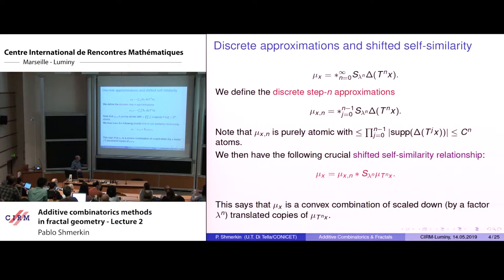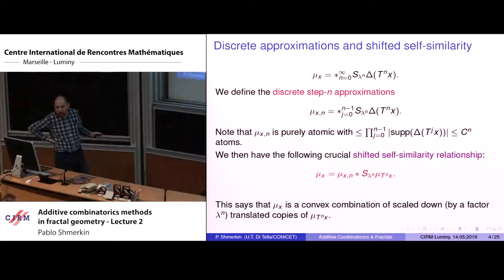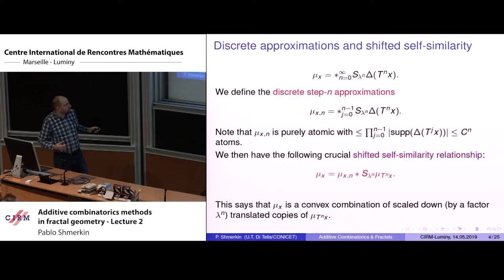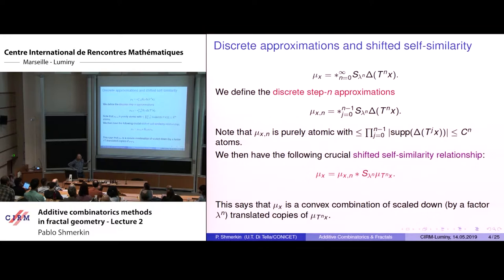This illustrates why it's called dynamical self-similarity — I'm also calling it shifted self-similarity. In the classical self-similar case, the two copies are of the same measure. Here, they correspond to two different elements of the group. The reason it's important that the dynamics is uniquely ergodic is that this is a very rigid situation — all these measures look the same quantitatively. They have quantitatively the same properties.